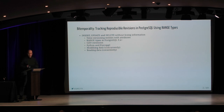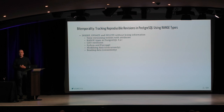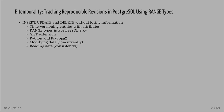So today's topic is bitemporality. We are going to track reproducible revisions in PostgreSQL using range types. In other words, we are going to insert, update, and delete on our PostgreSQL database without losing any information.